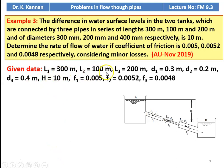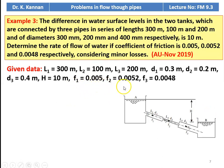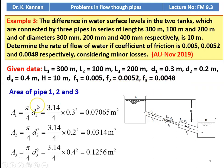Given: L1 = 300 m, L2 = 100 m, L3 = 200 m; D1 = 0.3 m, D2 = 0.2 m, D3 = 0.4 m; head difference H = 10 m; F1 = 0.005, F2 = 0.0052, F3 = 0.0048. Area of pipe 1: A1 = π/4 × 0.3² = 0.07065 m².